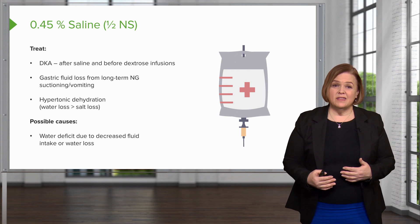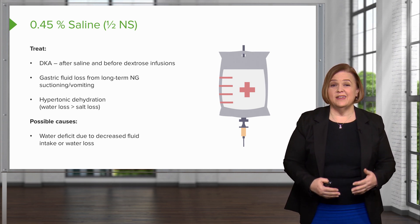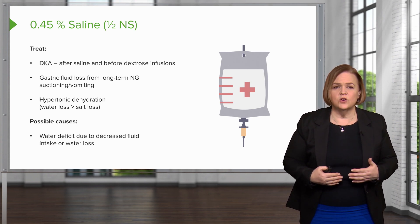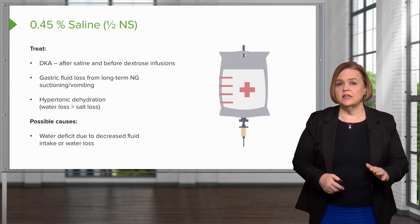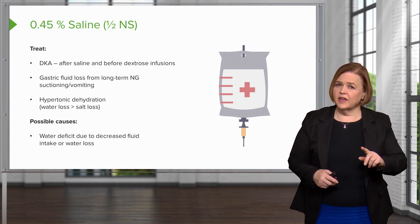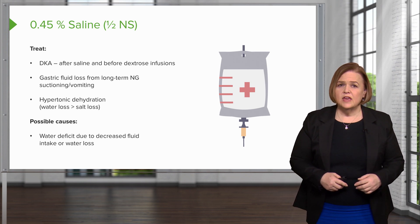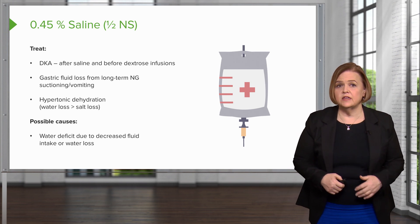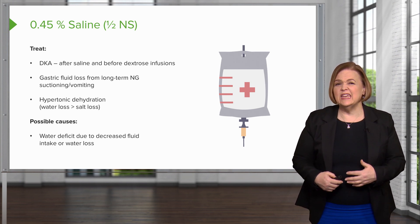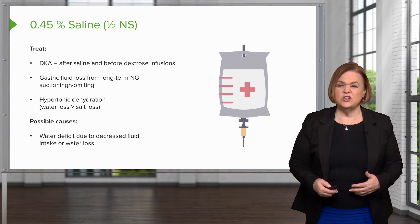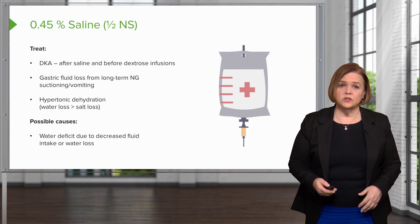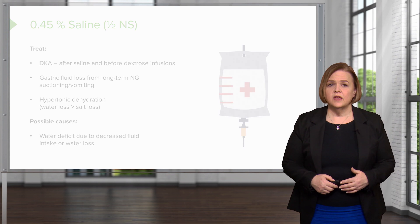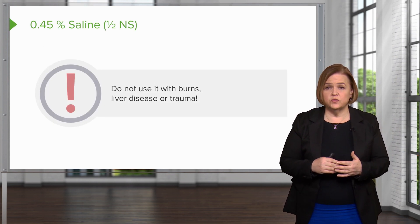People end up in that state because sometimes they have a water deficit — they haven't had enough to drink, they've been cut off from their fluids, or they just have a severe water loss. So half normal saline can be useful in DKA — but remember that's really individualized. If the patient has lost a lot of water and has a high sodium, half normal saline is helpful, as is anyone who's had intractable vomiting or an NG tube. Do not use it with patients who've had burns, liver disease, or trauma.